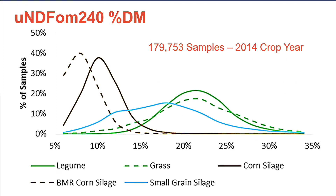Here is another example from Dairyland Labs looking at the different values. You can see that the best curve is BMR, meaning it has the lowest level — you want a low UNDF value. But you have to have some value because that is what makes the rumen very healthy. Grasses and legumes tend to have a higher level of UNDF. This would be a very futuristic tool we'll be using in building rations and determining dry matter intake.